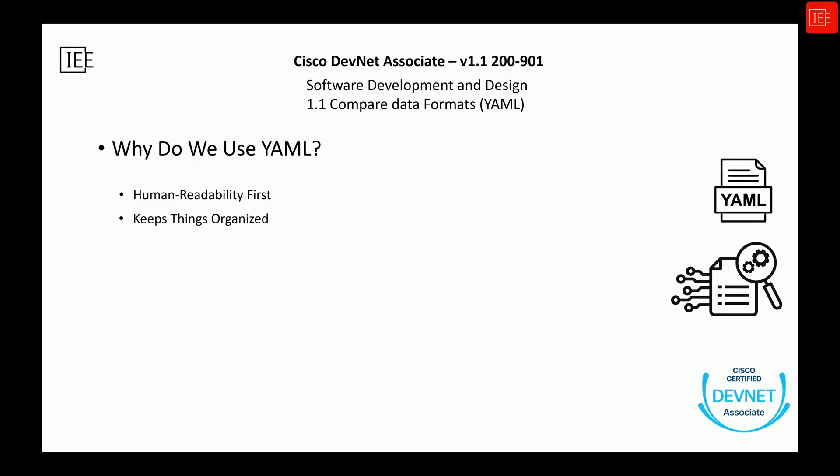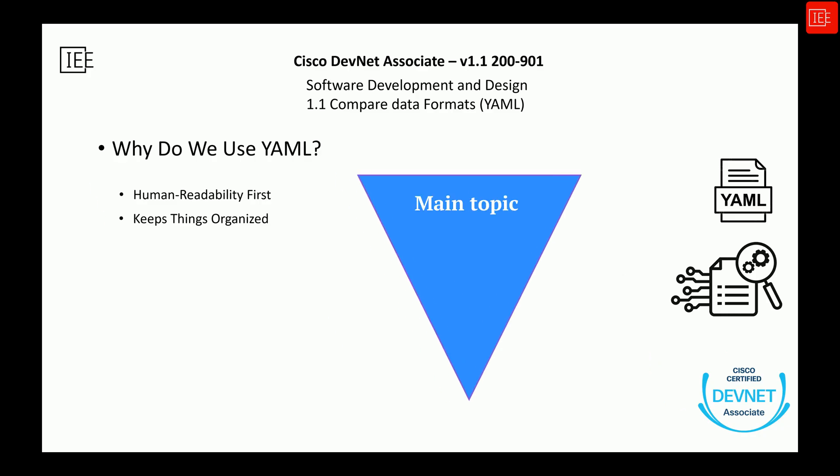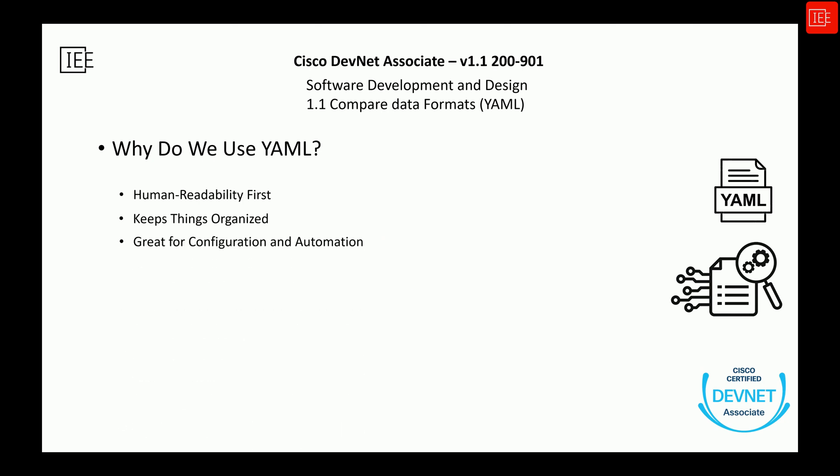YAML forces you to use indentation to show relationships between pieces of data. If something belongs under something else, you simply indent it — no confusing syntax, just a logical visual structure. Think of it like outlining your thoughts when planning a project: you've got the main topic, the subtopics, and then the details. When we automate tasks in networking, we often need to send structured information to scripts, APIs, or automation engines. YAML makes it extremely easy to define a list of devices, describe interfaces, and outline configuration steps.